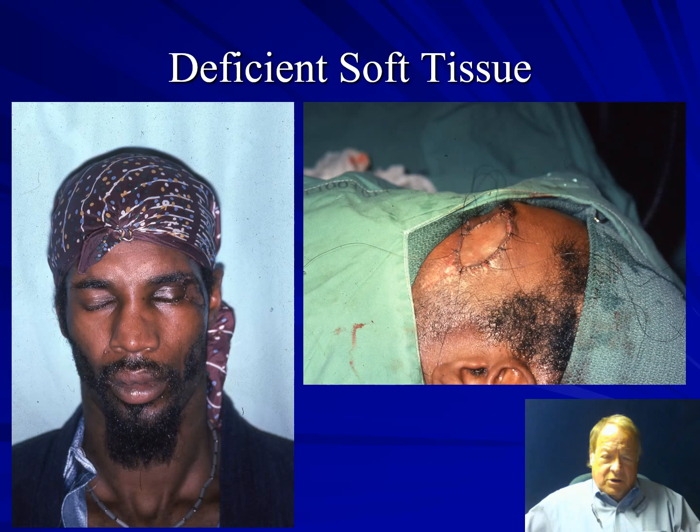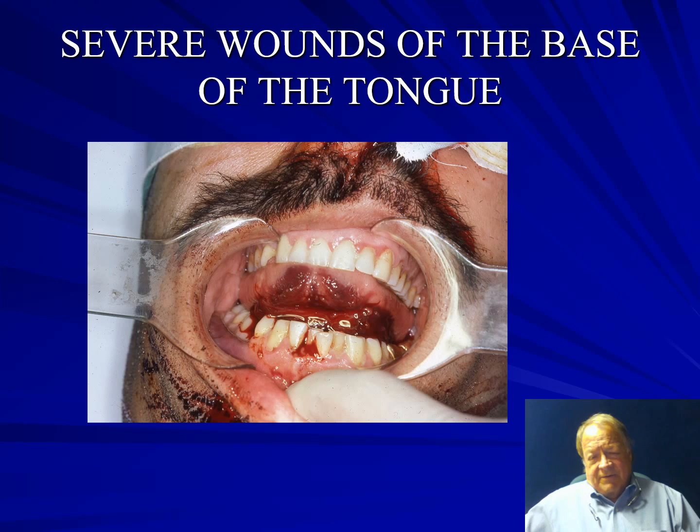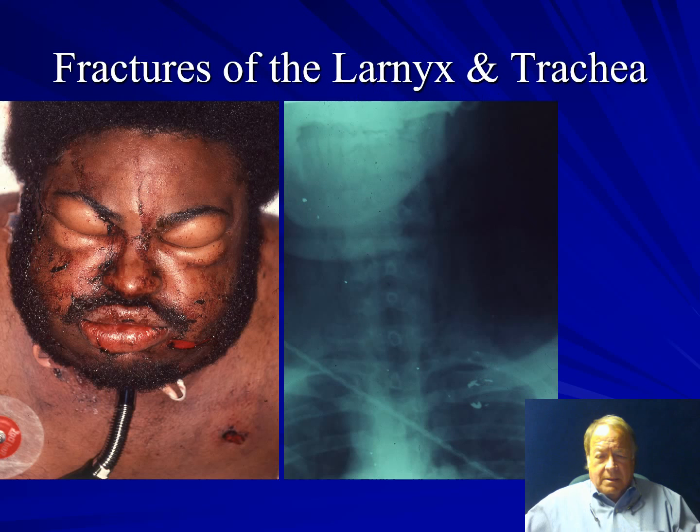Along with mandibular fractures and facial soft tissue injuries, you can have massive tongue injuries intraorally. This case has an entrance wound into the chin, and what appears to be a blood clot in the floor of the mouth is actually a huge submucosal hematoma with elevation of the tongue superiorly and posteriorly, which can become a significant airway obstruction.